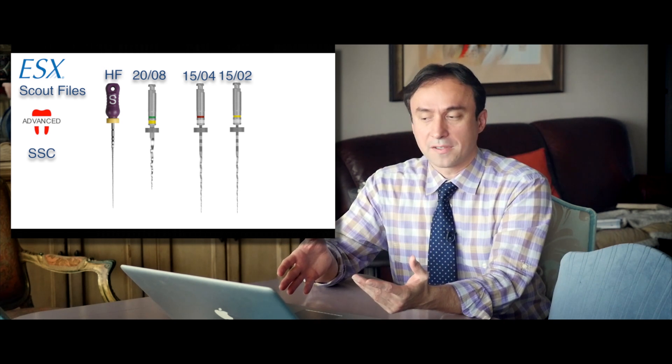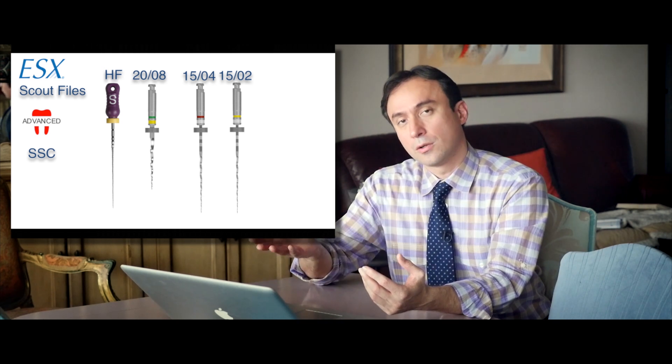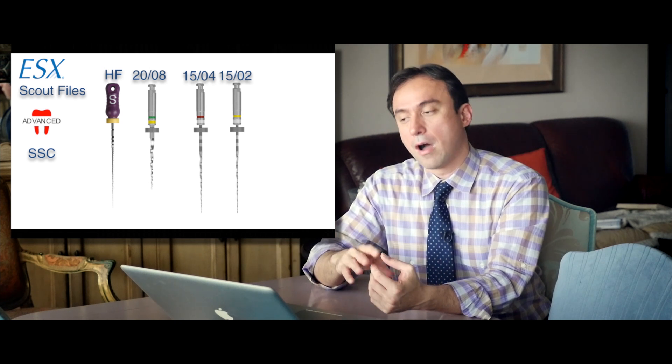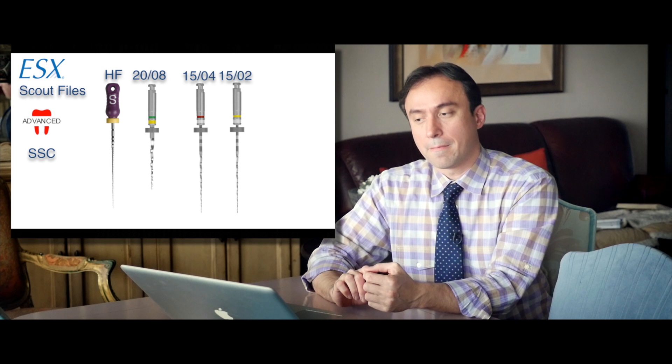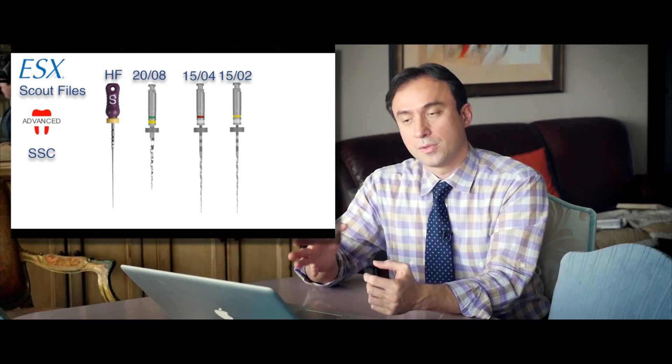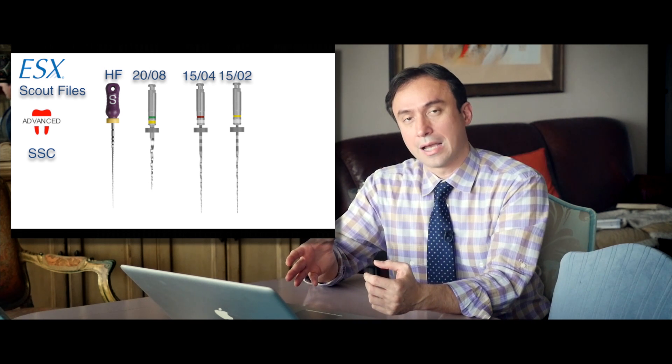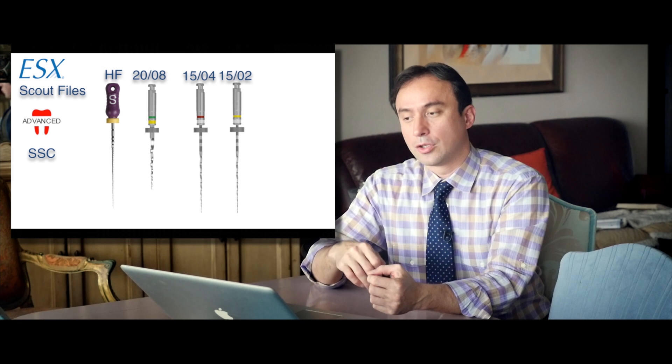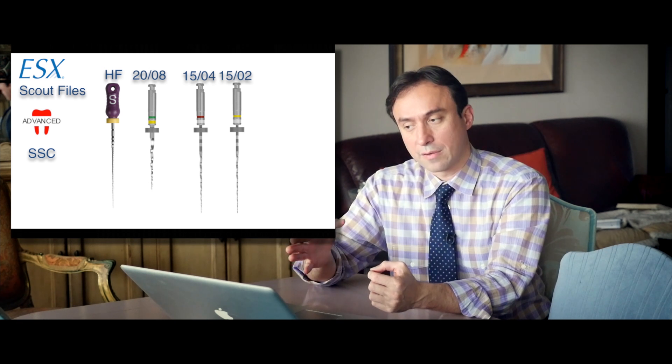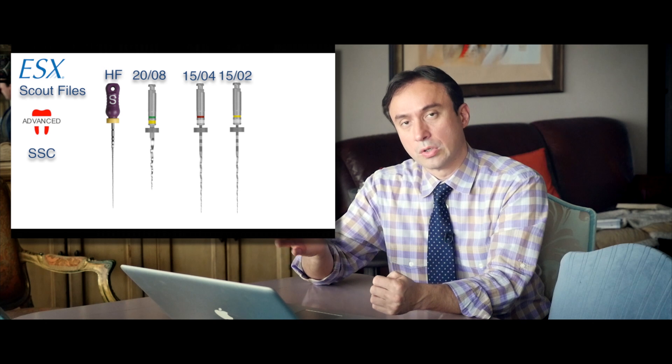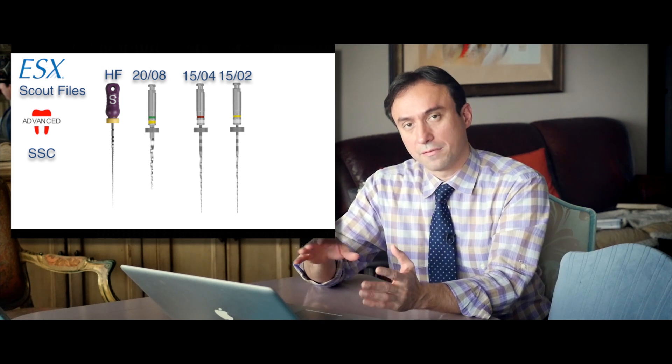After using the orifice opener, then you do a single stroke of the 1504 followed by a single stroke of the 1502. And if you have used the size 8 hand file down to the apex already, you would notice that by the time you do one stroke of 1504 and one stroke of 1502, you will very likely already be at the apex with your 1502.